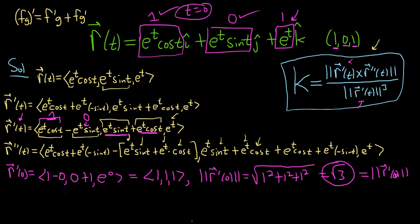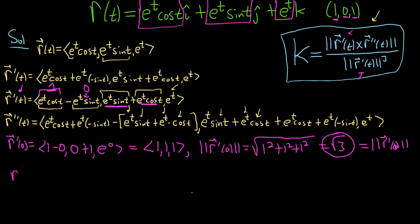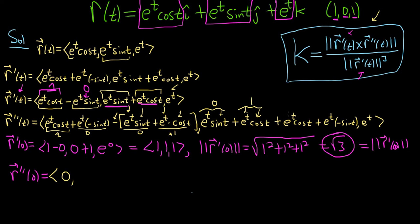Now let's find r double prime of 0. Plugging in 0: the first component gives 1 times 1 minus 1 times 1, so 1 minus 1 = 0. The second component: that piece is 0, this piece is 1, plus another 1, so 0 + 1 + 1 = 2. And the last component is e to the 0, which is 1. So r double prime of 0 equals 0, 2, 1.